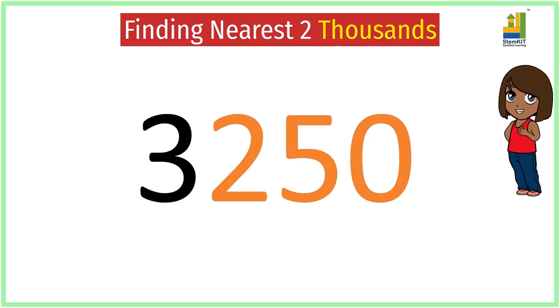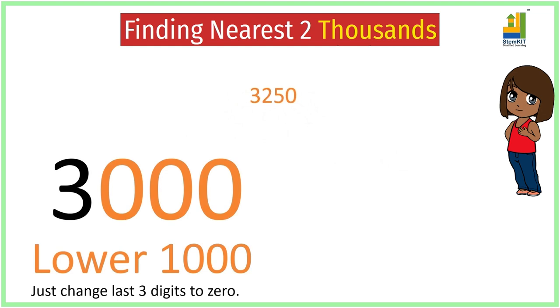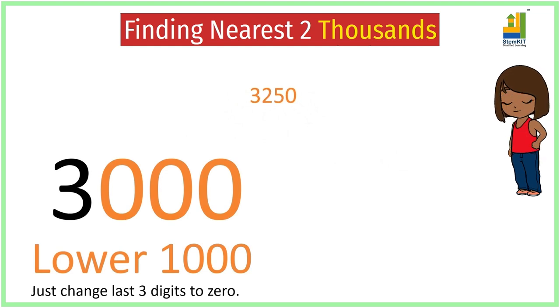The lower thousand is three thousand. Now, to get the upper thousand, add a thousand to the lower thousand, and we get four thousand.